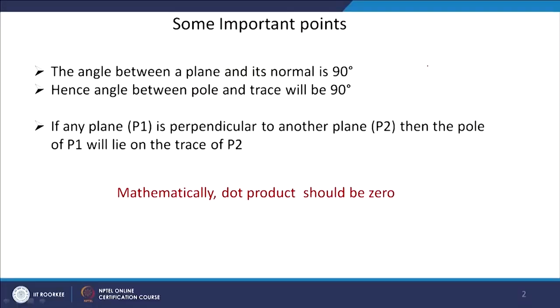Before coming to that, there are some important points we should remember: for any plane, the angle between a plane and its normal will always be 90 degrees. If this is a plane and this is its normal, the angle between a plane and its normal will always be 90 degrees — that is why we call it the normal to that plane.